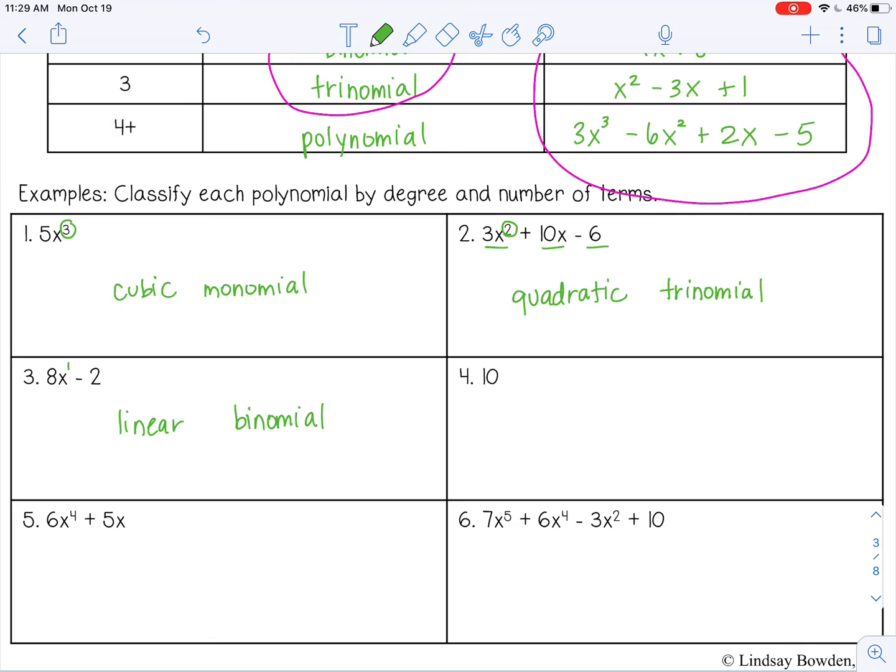Number four is a constant, so it has a degree of 0. It's a constant. And it's just one term, so it's a monomial.